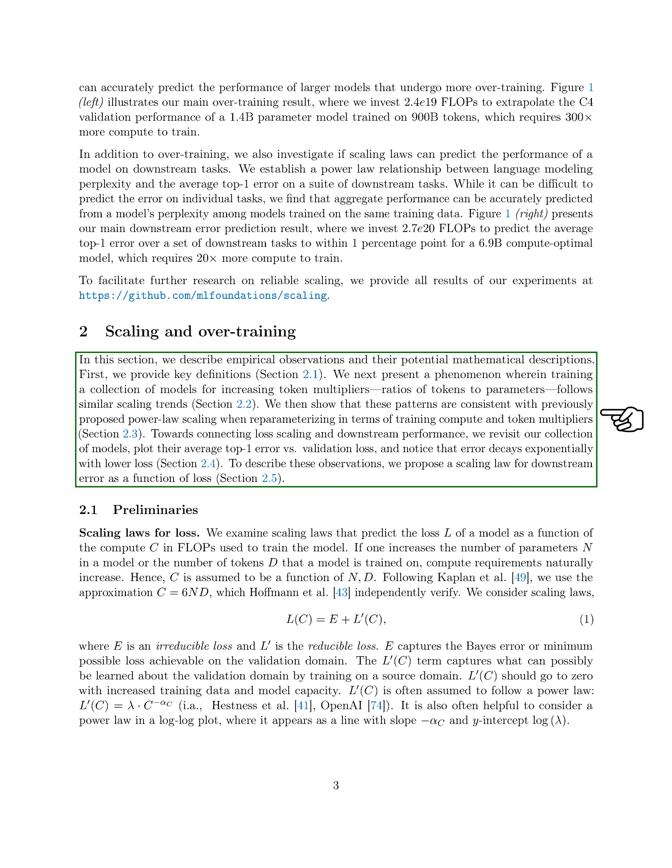In this section, we will describe our observations and potential mathematical explanations. We will first provide important definitions. Then, we will discuss how training models with increasing ratios of tokens to parameters show similar scaling patterns. We will also show that these patterns align with the idea of power law scaling when considering training compute and token ratios.